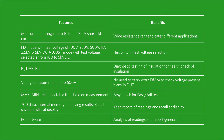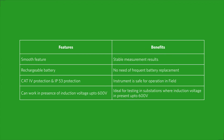Max and min limit selectable threshold on measurements for easy pass/fail test. 700 data internal memory for saving results — recall saved results at display so as to keep a record of readings. PC software for analysis of readings and report generation. Smooth feature for stable measurement results. Rechargeable battery so no need of frequent battery replacement. CAT 4 protection and IP53 protection, which ensures the instrument is safe for operation in the field.